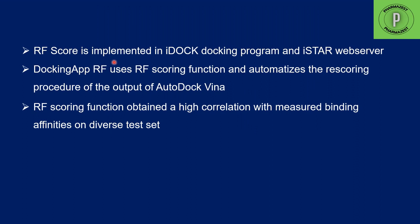The RF score function is implemented in the IDOC docking program and the iStar web server. They have also developed an app called DockingApp RF which uses the RF scoring function and automates the rescoring procedure of the AutoDock Vina output. It has been found that this scoring function obtains a high correlation with the measured binding affinities on diverse test sets.